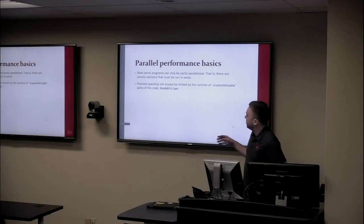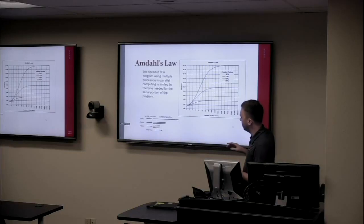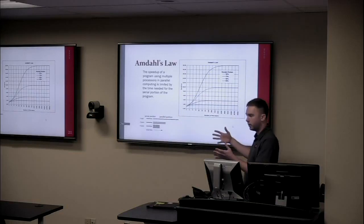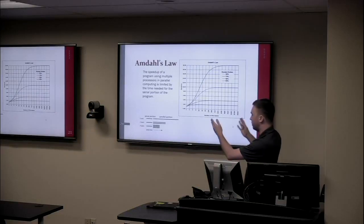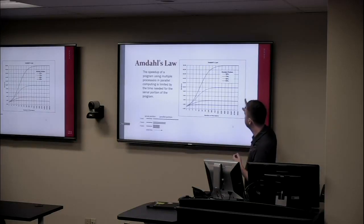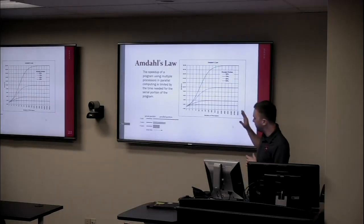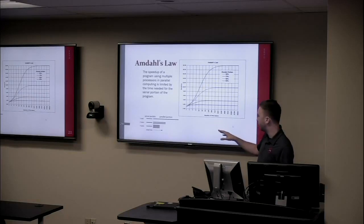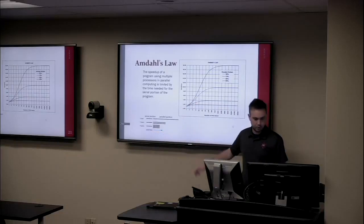Another important concept is Amdahl's Law. Most serial programs can't be fully parallelized. Envision a serial program as a line of execution — part of it can be split up and part of it can't. The part that can't is called the serial portion; it must run on a single core. Even with perfect speedup for the parallel portion, as the number of cores approaches infinity, you're never going to get faster than the performance of the serial portion alone.